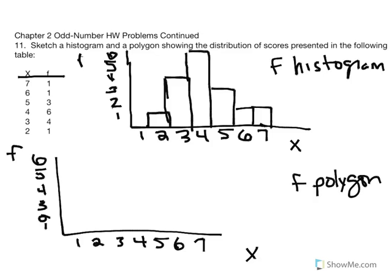We have a score of 2 occurring once, so we place our point there. A score of 3 occurring 4 times, a score of 4 occurring 6 times, a score of 5 occurring 3 times, a score of 6 occurring once, and a score of 7 occurring once. We connect these dots — it's a line graph.